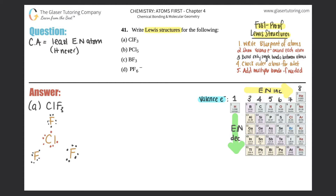Now we bond only single bonds between atoms — don't jump ahead to double bonds, just do single bonds first. I'll draw one single bond between each F and Cl. Now check the outer atoms for the octet — eight electrons. Each fluorine has two, four, six, eight electrons. All outer fluorines satisfy the octet rule.